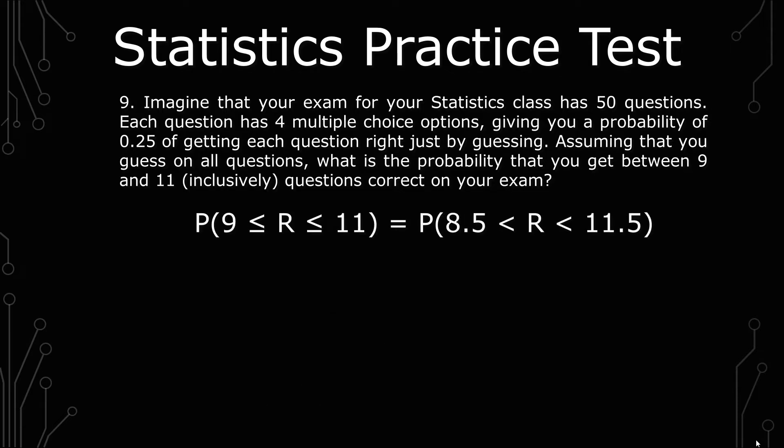We have probability of 9 less than or equal to R, so R is standing for right, less than or equal to 11, will equal, for the continuity correction, the probability of 8.5 less than R less than or equal to 11.5.